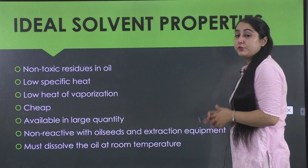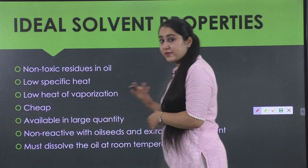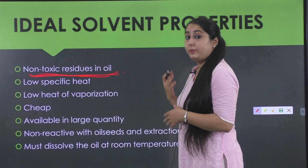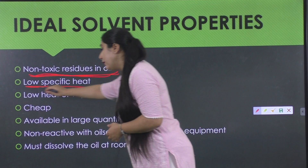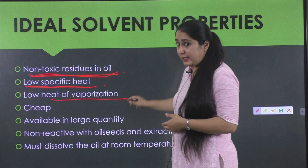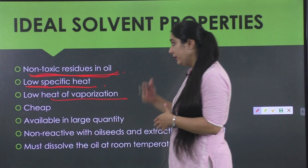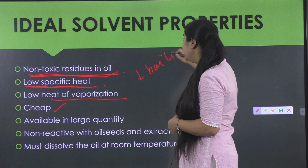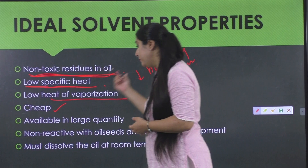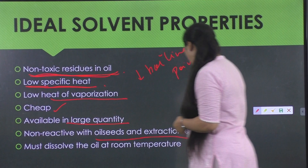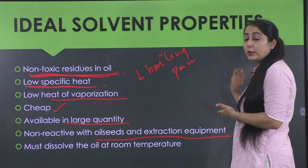The ideal solvent properties for oil extraction are: it must leave non-toxic residues in the oil so that any traces remaining are not harmful to human health; it should have a low specific heat and low heat of vaporization so it evaporates easily; it should have a low boiling point; it should be cheap and easily available in large quantities since the method requires continuous solvent supply; it should be non-reactive with the oil seeds and extraction equipment; and it must dissolve the oil at room temperature very easily.